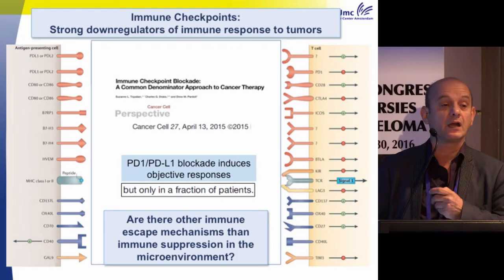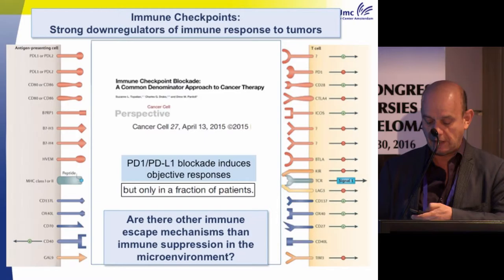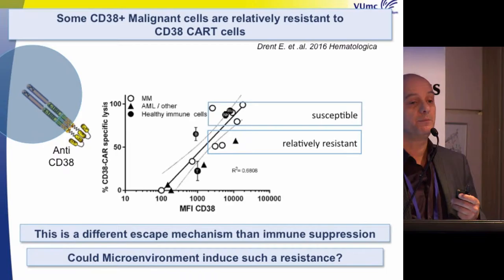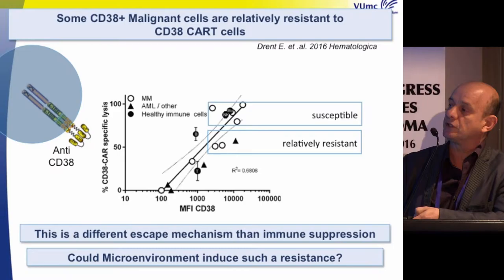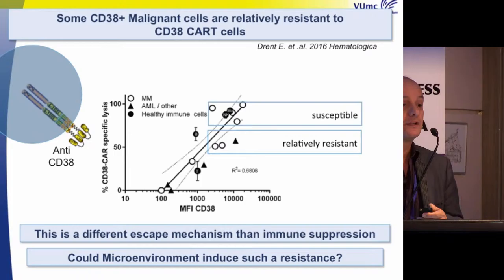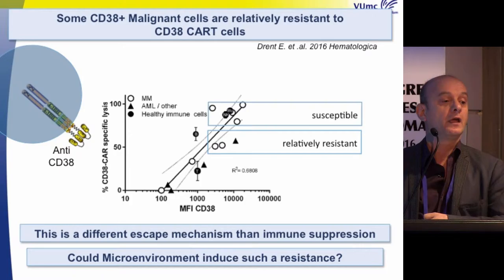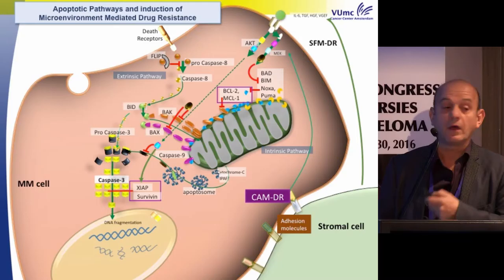This leads us to ask: are there other escape mechanisms and immune suppression in the microenvironment? There is actually another type of immune resistance. For example, with our CAR T-cells against CD38, we see a nice correlation between CD38 expression and CAR T-cell lysis, but one cell is more susceptible than another — a relative resistance. This is a different escape mechanism from immune suppression, and we asked whether this could also be induced by the microenvironment.